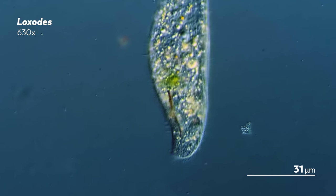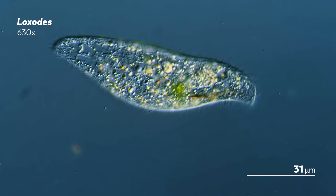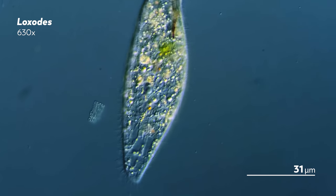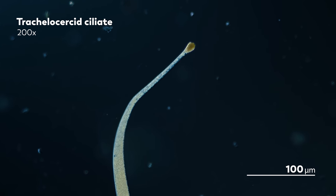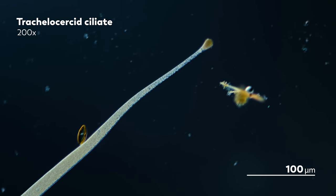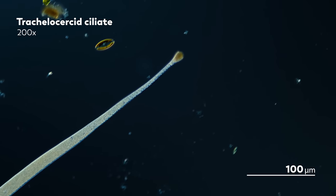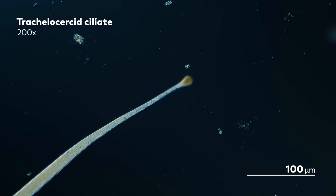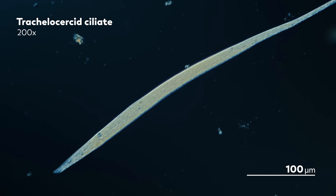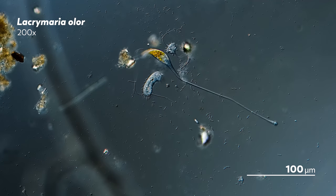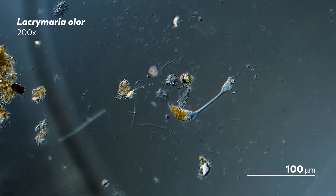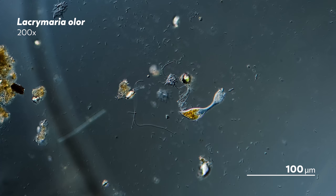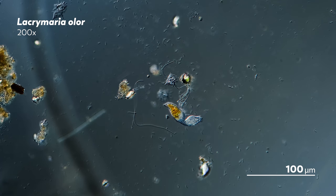Most karyorelictids live in the sands of marine environments. The notable exception are species of Loxodes, which live in freshwater. The trichelocercid, while very worm-like, still has some of its own distinct shapes. If we were asked to compare it to another ciliate, we might look at the Lacrymaria olor, with its neck similarly extending, seeking, and retracting. And like the Lacrymaria, the focus of the karyorelictids' pursuit is probably food.